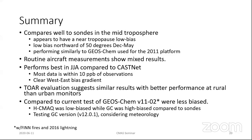The aircraft tends to show more mixed results — it's kind of hard to draw much of a conclusion from there. The CASTNET observations between June, July, and August are pretty good, but the spring tended to be low. That's probably related to the stratosphere low bias that was evident in the sonde evaluation.